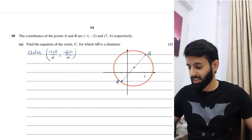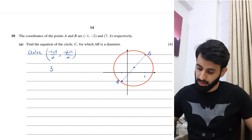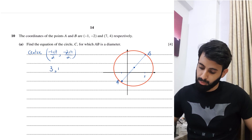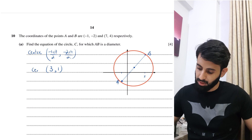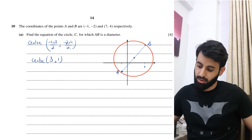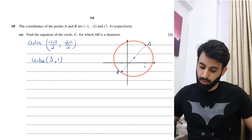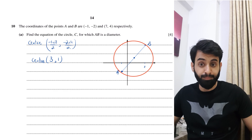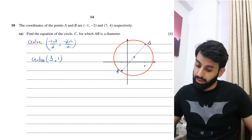Minus 1 plus 7 is 6, divided by 2 is 3. Minus 2 plus 4 is 2, divided by 2 is 1. So the center is at coordinates 3, 1.